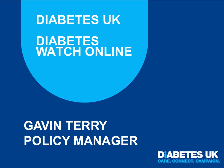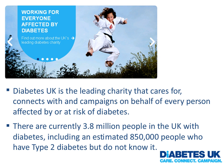Just a bit about our organisation: we're the UK's leading charity that cares for people with diabetes. We've got 165,000 patient members and 35,000 professional members. There are now just over 3.8 million people in the UK who have diabetes, including nearly a million who have type 2 diabetes but don't know it, so we've got a lot of people to serve.